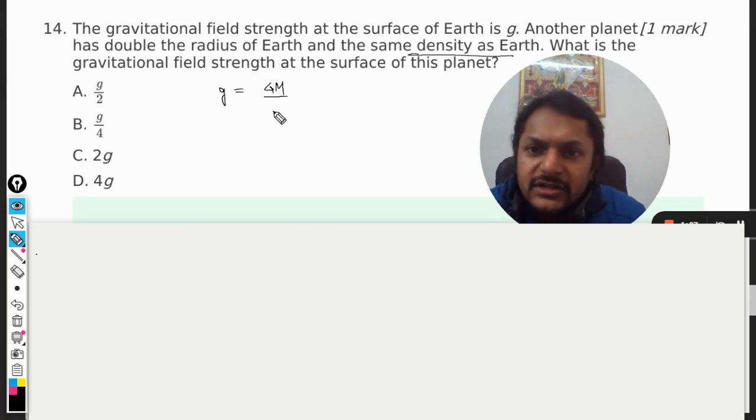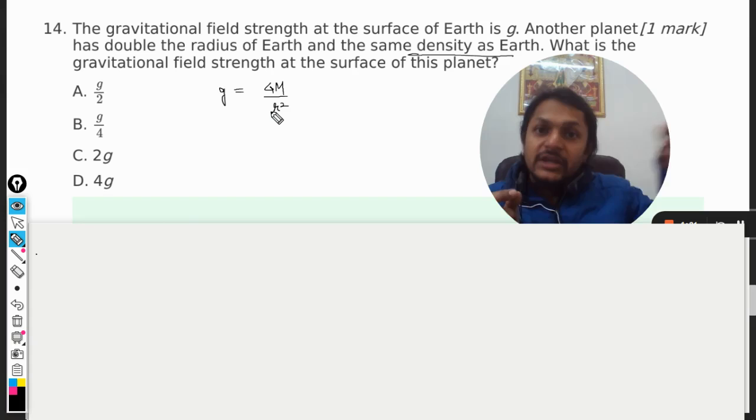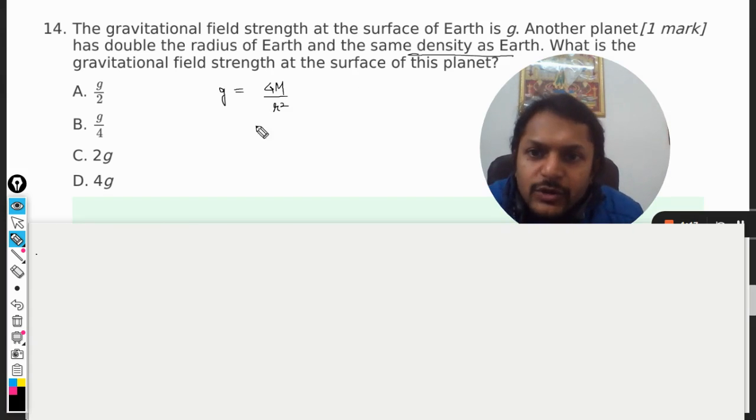But if r is equal to capital R, the formula reduces to GM by capital R square. So this becomes the gravitation at the surface of a planet, fine. And this mass can further be written - it can be divided into sub parts, volume and density.